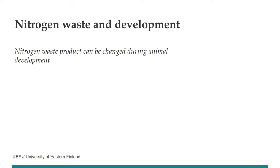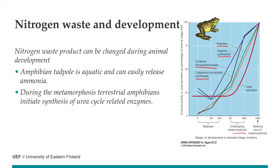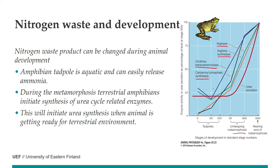The waste product can be changed during an animal's life. A good example is the amphibian tadpole: it first lives aquatically and releases ammonia, which is simple to produce, allowing it to use ATP for growing as fast as possible. But during metamorphosis, it begins synthesis of four different enzymes needed for urea synthesis, and therefore starts urea excretion before climbing onto the terrestrial environment.